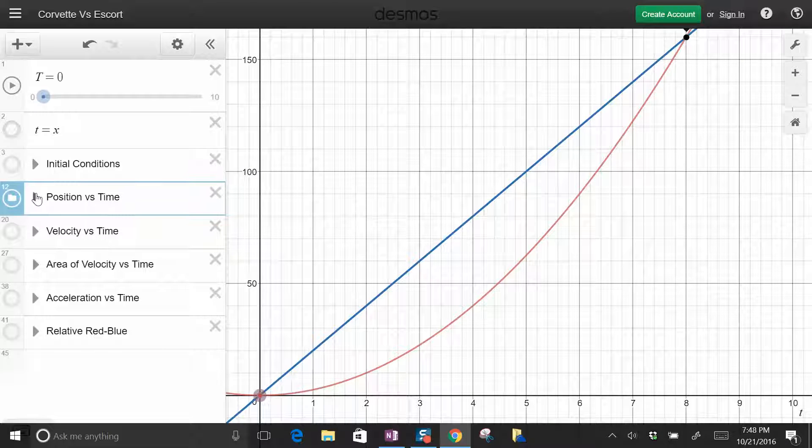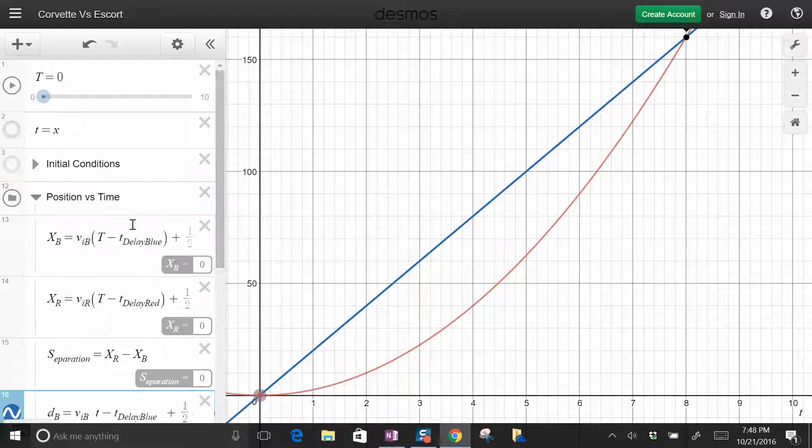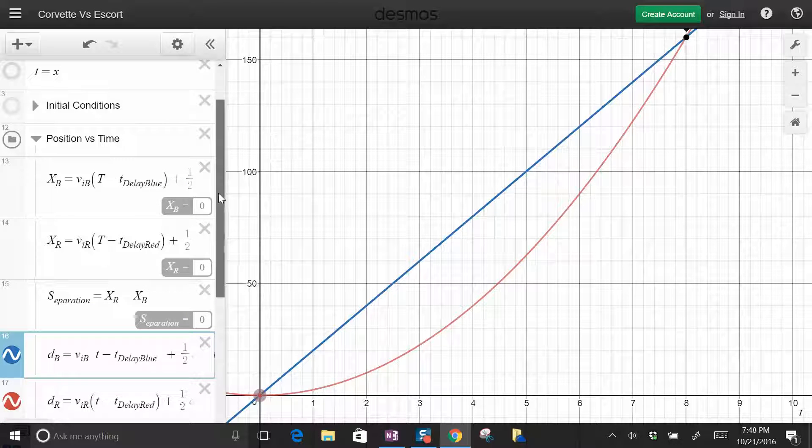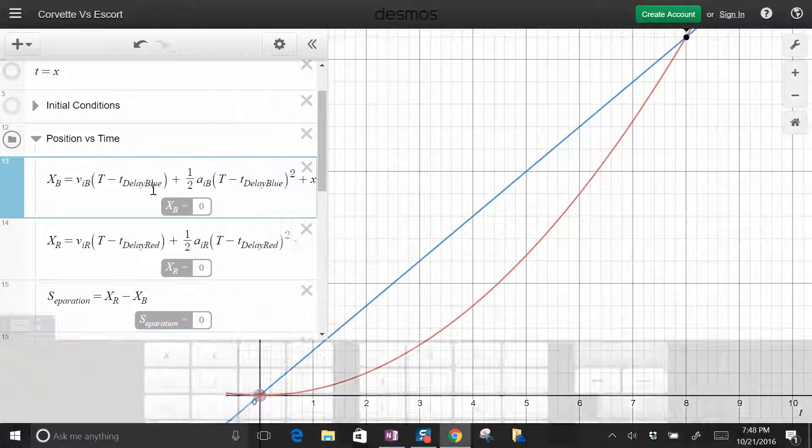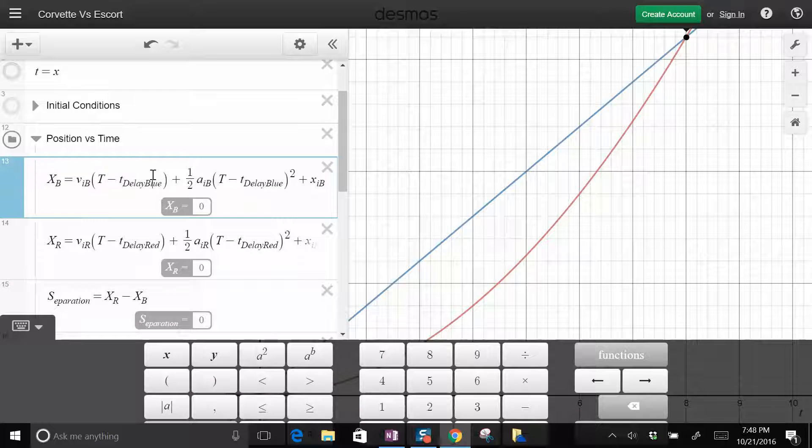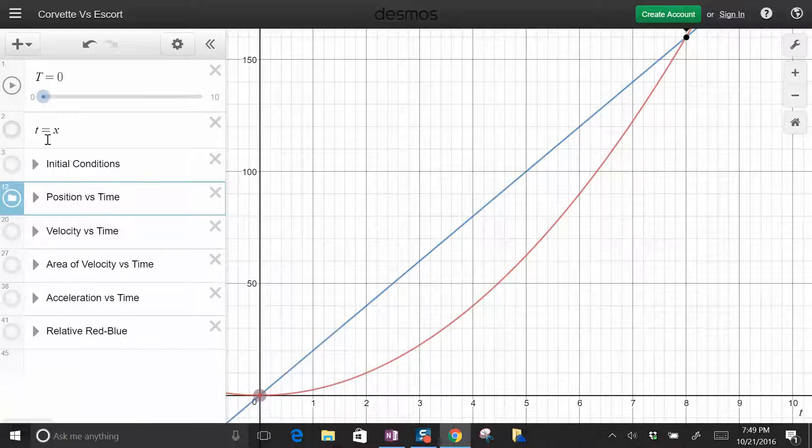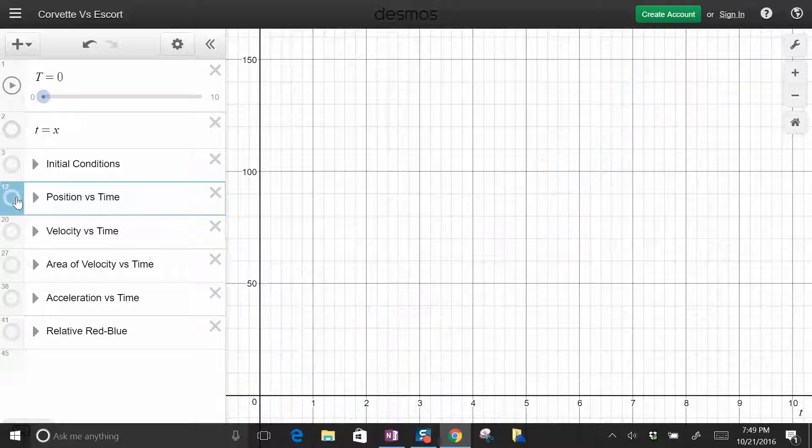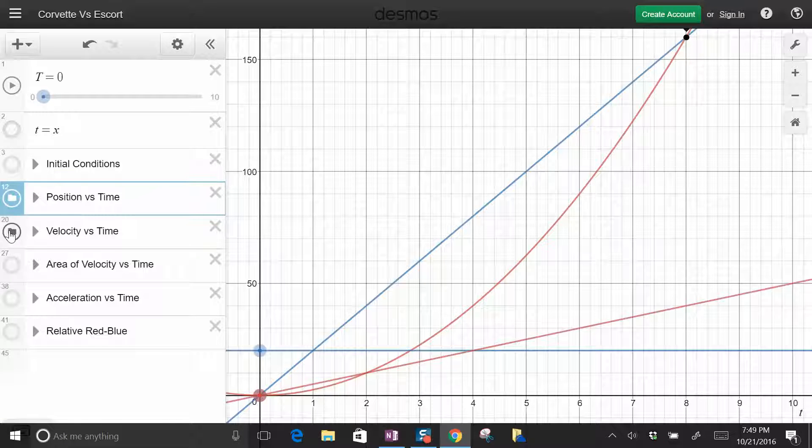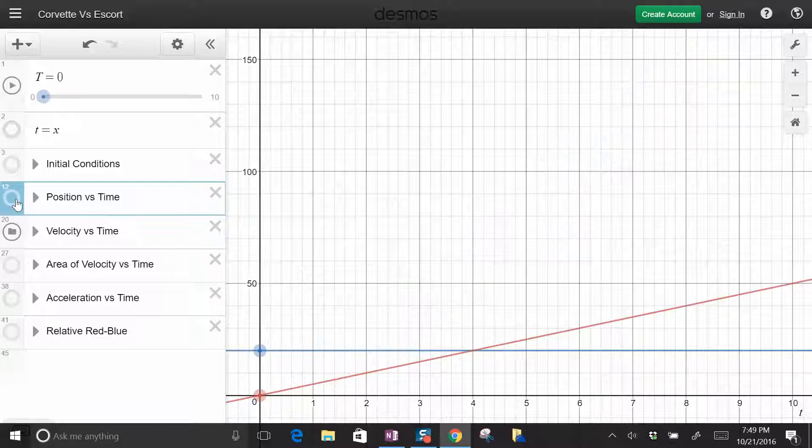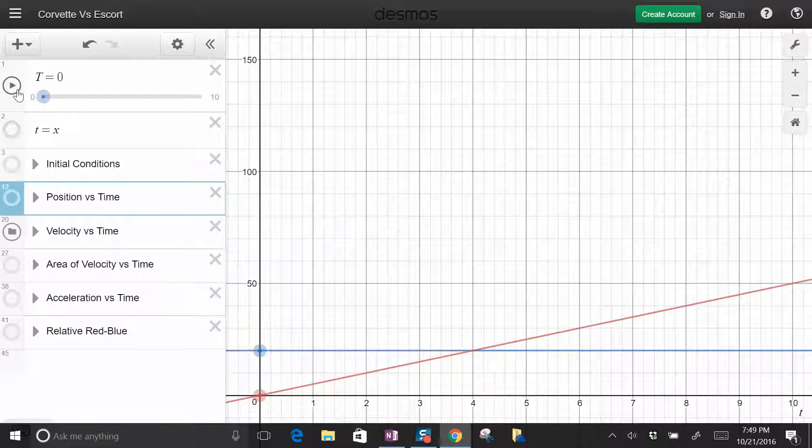Now if you want to see where those equations came from, they're equations that you're probably used to, position versus time, although there's this delay term in case you leave later or earlier. I can turn the position on or off. I can do the velocity on or off. In fact, I like to look at them one at a time. If we play here, you can see constant velocity for me, accelerating for the police car.